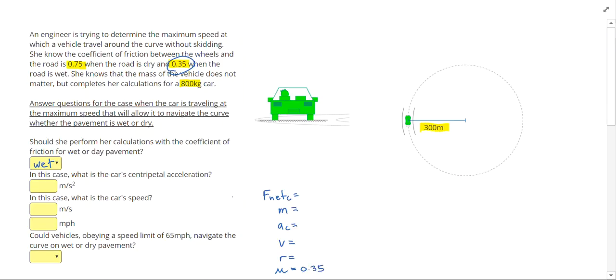800 kg is the mass of the car, so let's write that down as the mass. And this distance from the outside of the curve to the center of the curve, that is our radius of curvature.